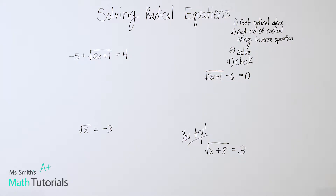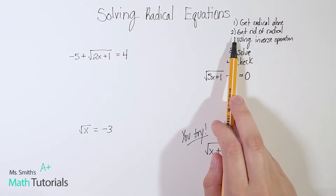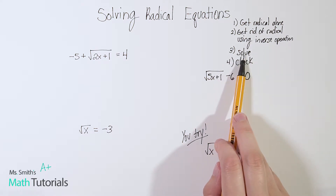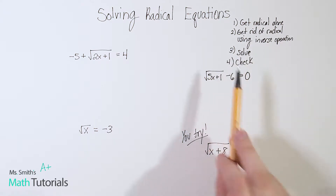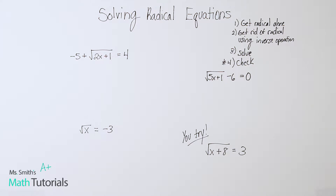So quickly walking through the steps. Your first step is to get the radical alone on one side of the equation. Step two is get rid of the radical using inverse operations. Step three is solve. And then step four — this is kind of the most important one — you have to check your answer. Your teachers always tell you check your answer, plug it back in, see if it works. But this time, you truly have to check your answer because sometimes your answer is not actually going to be a real solution. So it's kind of unique, but you do have to do the checking step.